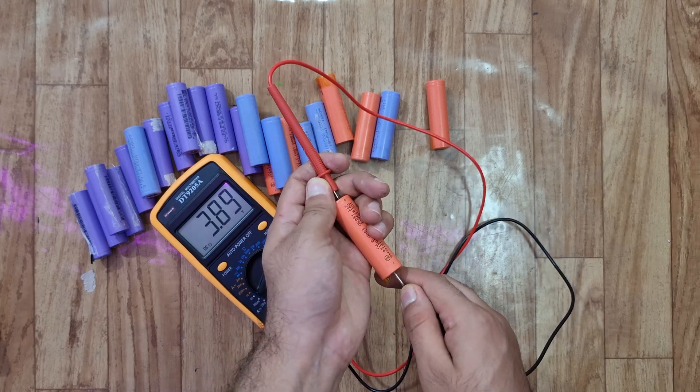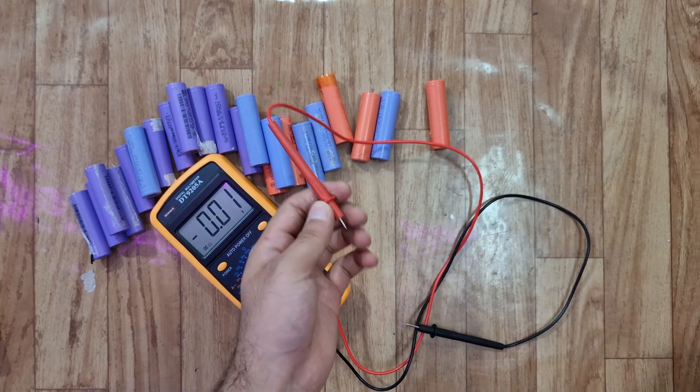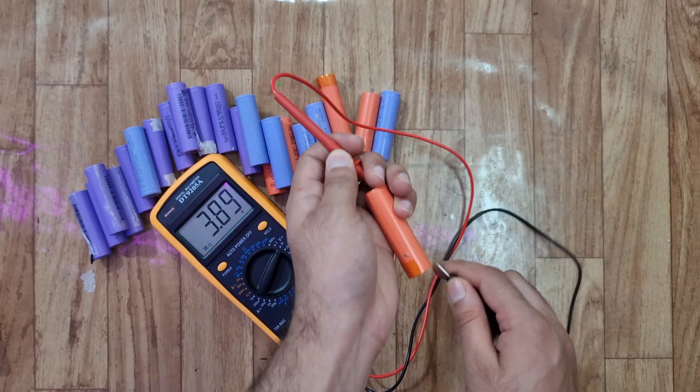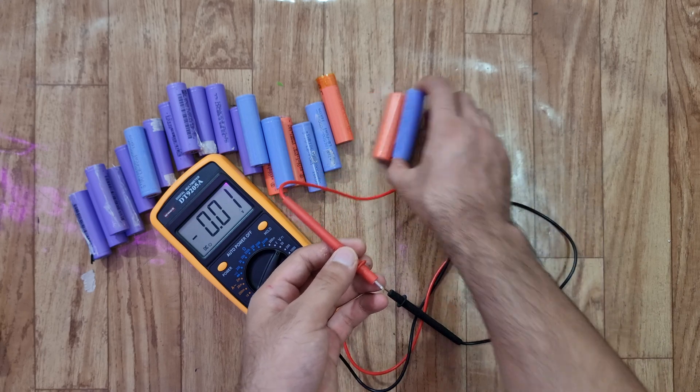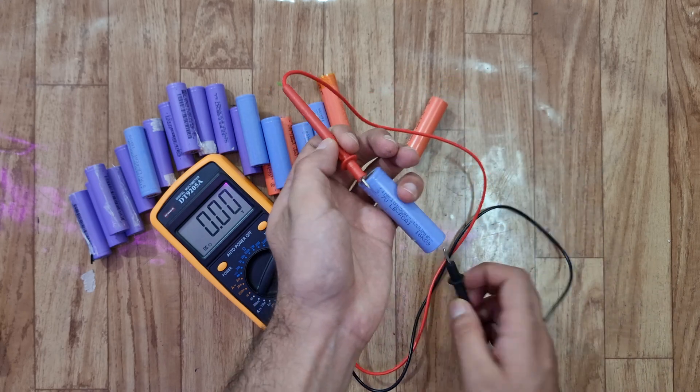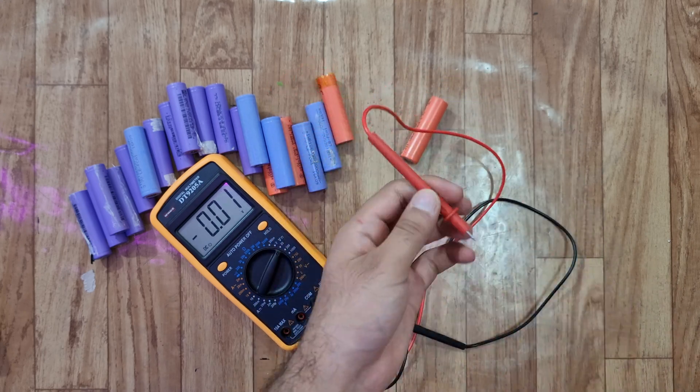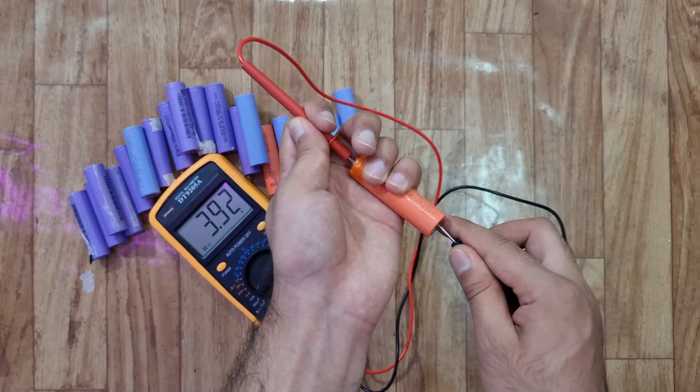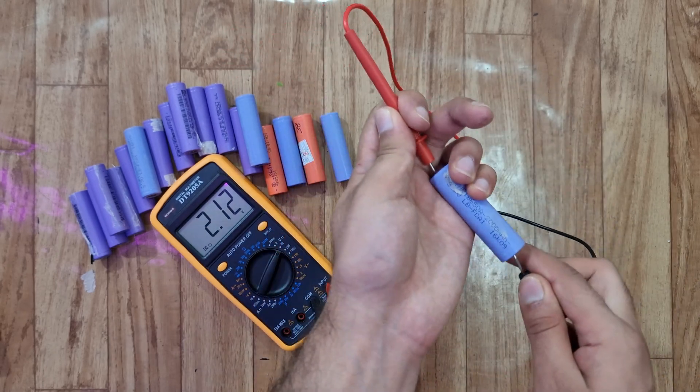This one is also good. If you are getting a voltage of less than 2 volts, you may consider the cell as bad. So let's fast forward through this and we will finally see how many of them are good and how many of them are bad.